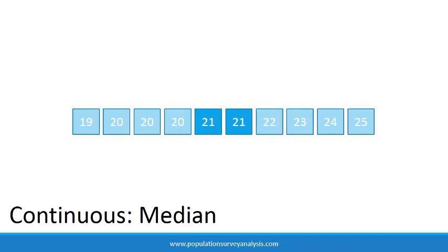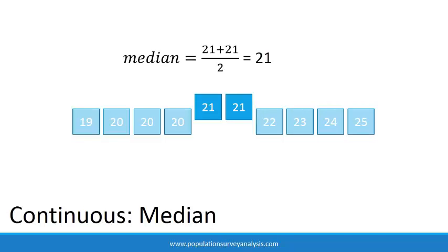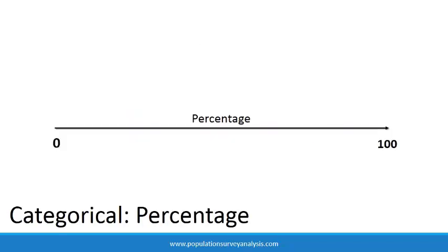If there are an odd number of values, the median will be the central number if you lined up the values from lowest to highest. If there is an even number of values, the median will be the average of the two central numbers.